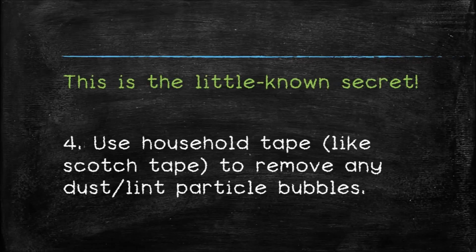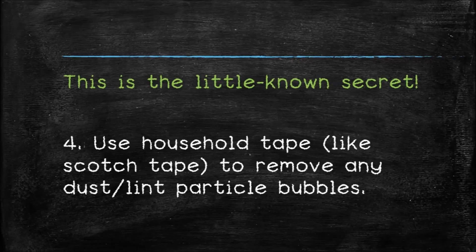And here's the secret step. Typically the most difficult bubbles to remove are those caused by dust or lint particles trapped between the film and the iPhone's glass. The secret to removing those bubbles is to simply use one piece of tape — such as household scotch tape — to pull up on the corner of your screen protector nearest the bubble, and then use another piece of scotch tape to dab the area where that bubble was. Dab the bottom of the screen protector — the sticky side — and also dab the glass of your iPhone where the bubble was present. Then slowly let the screen protector back down. Typically the tape will adhere to and grab the dust or lint particle, and when you put the screen protector back down there should be no more bubbles.